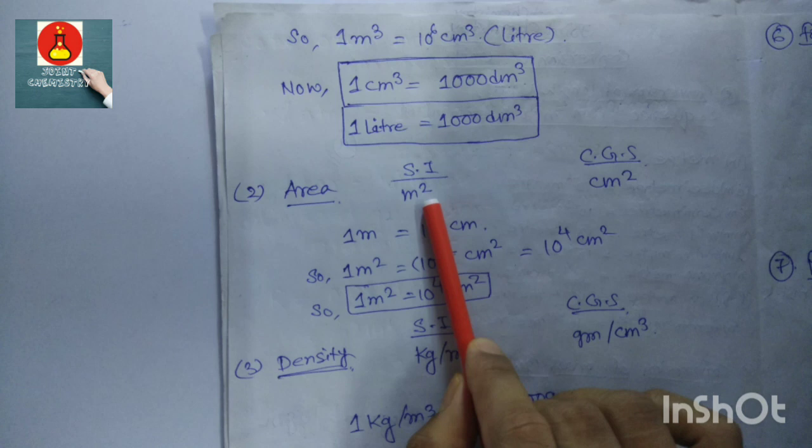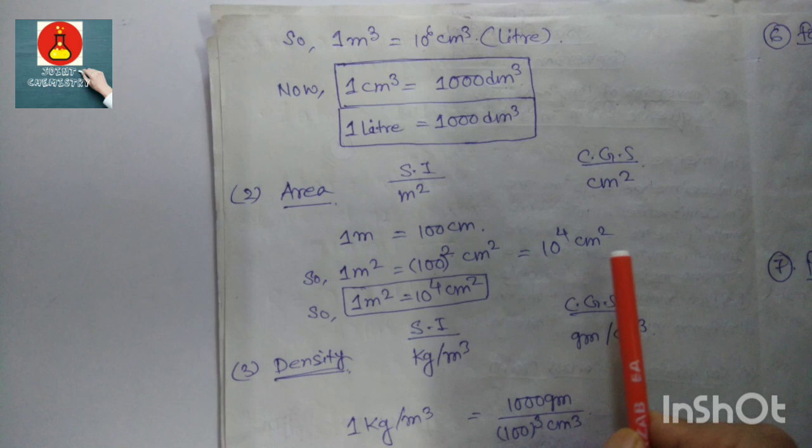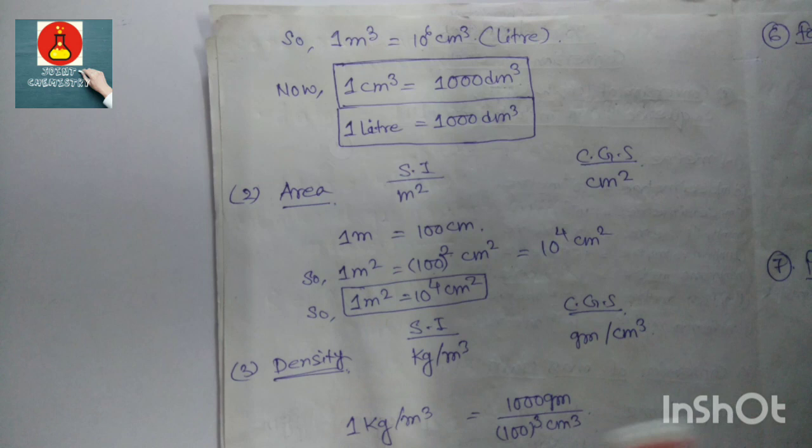Area: SI unit is m² and CGS unit is cm². Since 1 meter equals 100 centimeters, 1 m² equals 10⁴ cm².